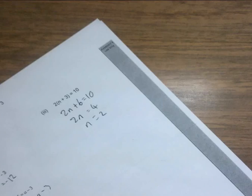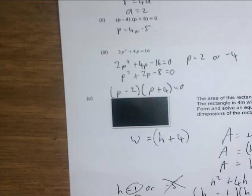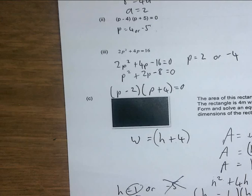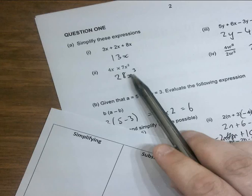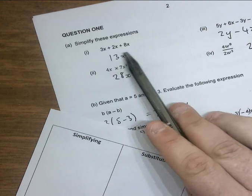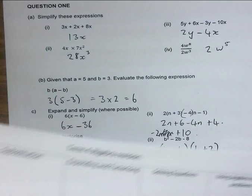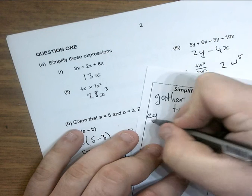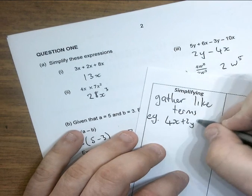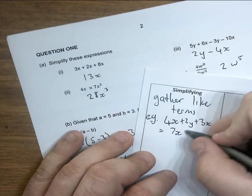We're done! Now go through the ones you got wrong — or even ones you just want to revisit — and on the revision sheet write any keynotes or keywords that will help you. For example, if you got the first question wrong, write 'simplifying like terms' and note that you can only add terms that are alike. You might write an example like: 4x + 2y + 3x = 7x + 2y, and that's as far as you can go.